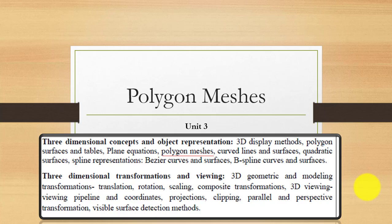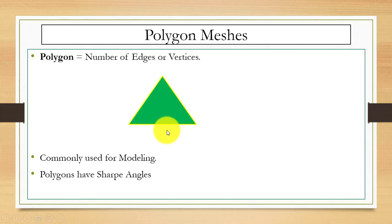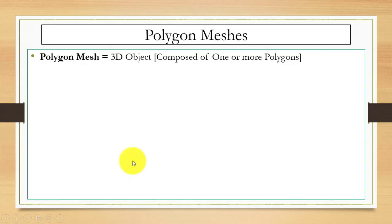In this video you will learn about polygon mesh. In short, a polygon has a number of edges and vertices. For example, here we have a polygon with three vertices — first, second, third — and three edges — first, second, third. Polygons are most commonly used for modeling.